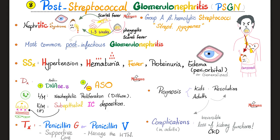Post-streptococcal glomerulonephritis is caused by group A beta-hemolytic Streptococcus pyogenes. Clinical features include hypertension, hematuria, fever, proteinuria, and periorbital puffiness. For diagnosis: streptococci secrete DNase so look for anti-DNase antibodies; they secrete streptolysin O so look for ASO — but remember, if the infection started as a skin infection, cholesterol destroys streptolysin O and ASO will be negative. Light microscopy shows neutrophil proliferation and hypercellular glomeruli. Electron microscopy with immunofluorescence shows sub-epithelial immune complexes — lumpy-bumpy. Prognosis in kids is excellent; in adults it can lead to irreversible chronic kidney failure. Treatment is supportive — give penicillin G or penicillin V since this is a gram-positive coccus, and treat hypertension.